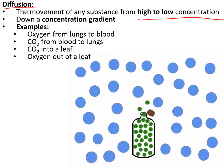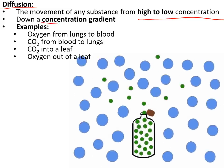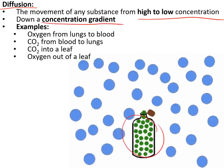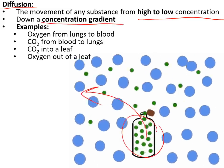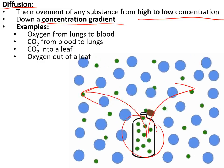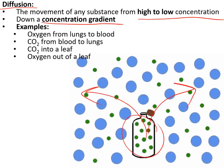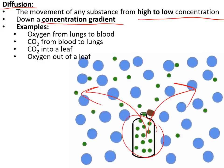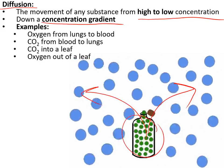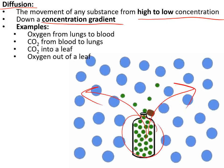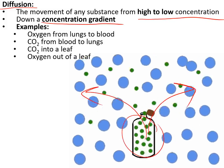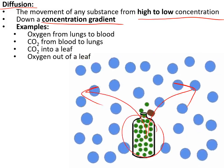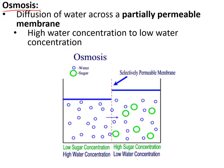Diffusion is how most substances move in and out of cells — from high concentration to low concentration, down a concentration gradient. You can see that happening in the bottle: substances move from high concentration inside the bottle toward low concentration outside. This is how oxygen goes from the lungs to the blood and carbon dioxide goes from the blood to the lungs. It's also how carbon dioxide goes from the air into the leaf and oxygen goes from the leaf back out into the air.